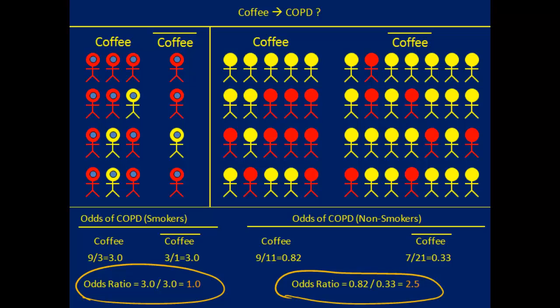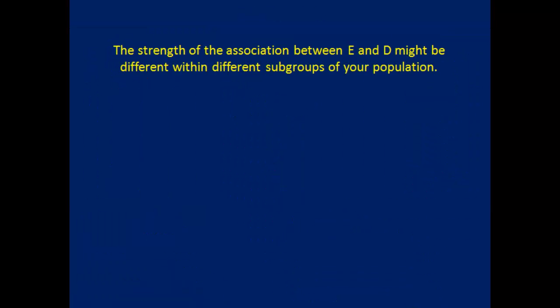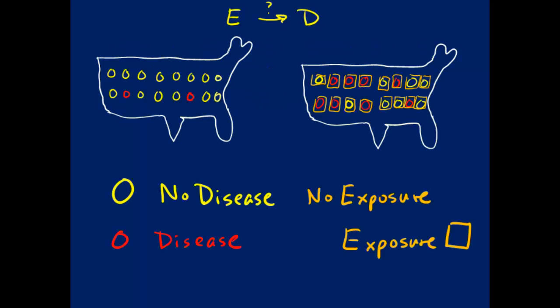The takeaway idea here is simply that when you stratify, the strength of the association between your exposure and your disease variable might be different within different subgroups of your population. The subgroups we were looking at were the subgroup of smokers compared to the subgroup of non-smokers. Let's take a look at this idea of different magnitudes of effects of exposure on disease in different subgroups from a different angle.